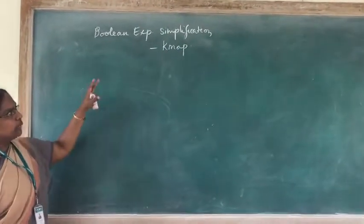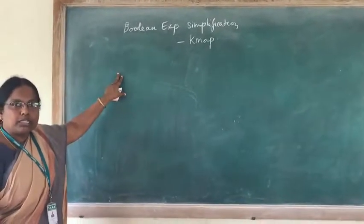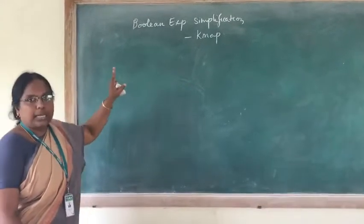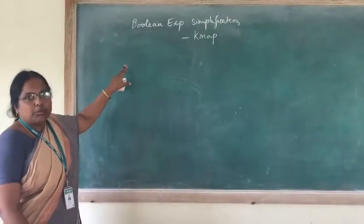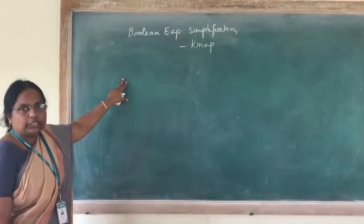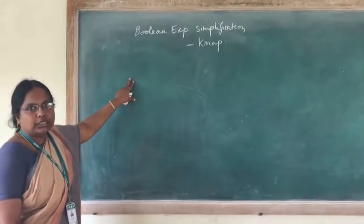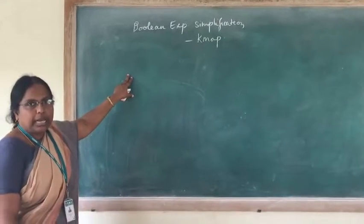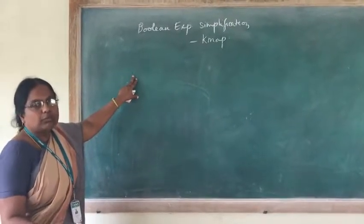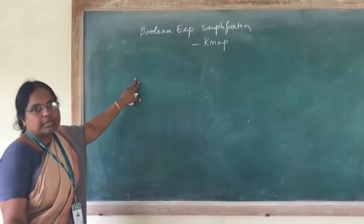There are two ways by which we can simplify Boolean expressions. One is by applying Boolean rules and the other by using K-map. When we apply Boolean rules, we have two disadvantages: we need to remember all the rules and regulations, and at each step we need to predict which rule to apply for simplification.